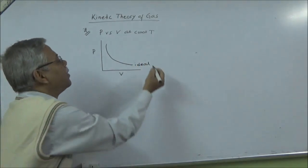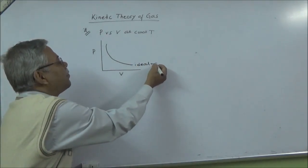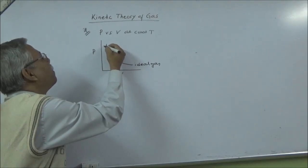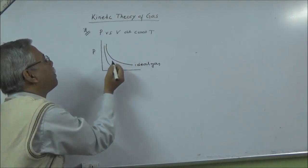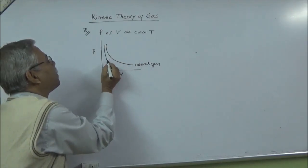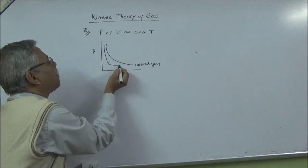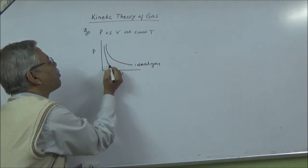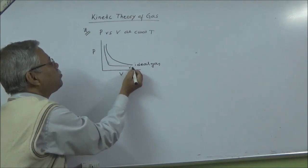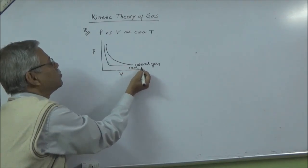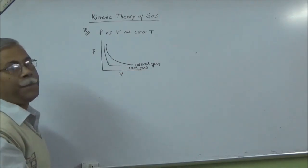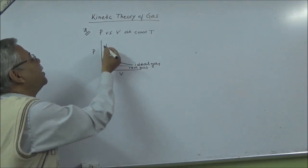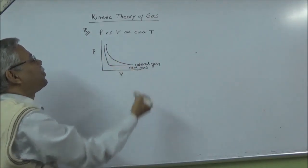But for a real gas it is different. So this is the graph for ideal gas and this is the graph for real gas at constant temperature.